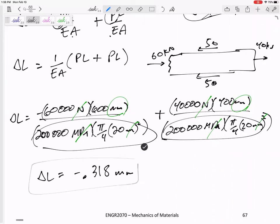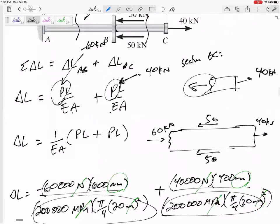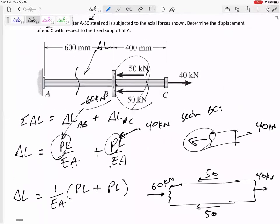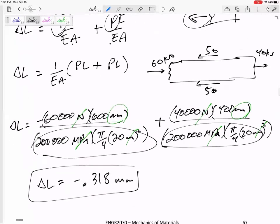Delta L negative 0.318 millimeters. All right, negative 0.318 millimeters. So apparently that section over here was really getting compressed, but this section was getting stretched. But if I add them up together overall.